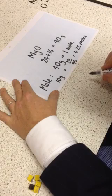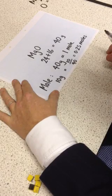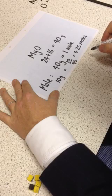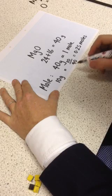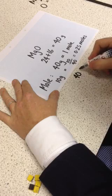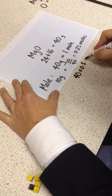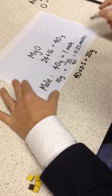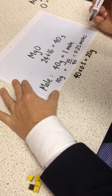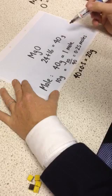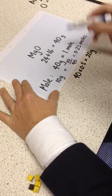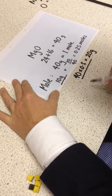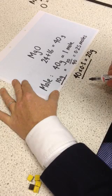The other thing we can do is if we were asked to calculate the mass of half a mole, we can do 40 times 0.5 equals 20 grams. So once we know how much one mole has a mass of, we can work out both how many moles we've got, or how much the mass will be of a certain number of moles.